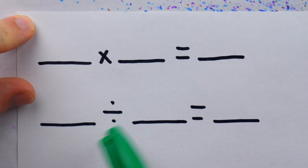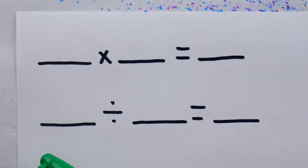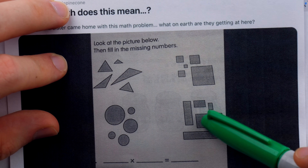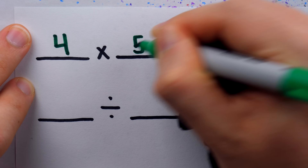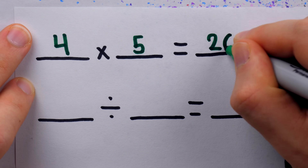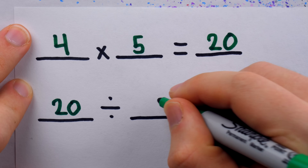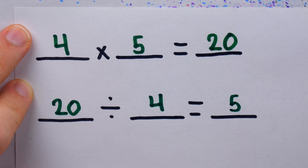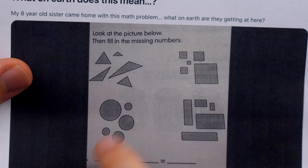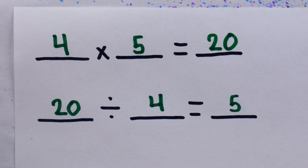We need to fill in some sort of product and some sort of division. When you look at the picture, what we see is that there are four groups each with five objects. That means there are 20 objects total. So the obvious solution is that four groups of five objects is equal to 20 objects, and that 20 objects split into four groups is equal to five objects per group. While the awkward shapes and their different sizes suggest there could be more going on, this seems like the obvious solution.